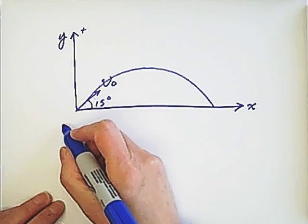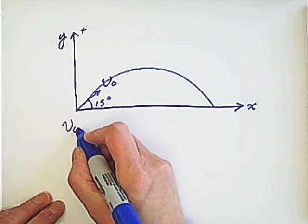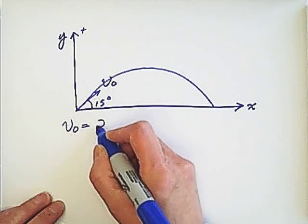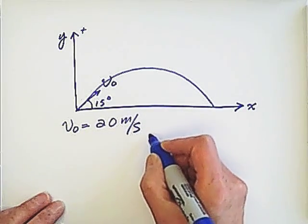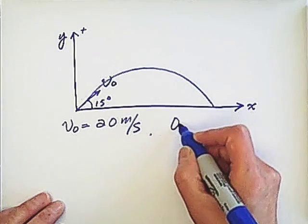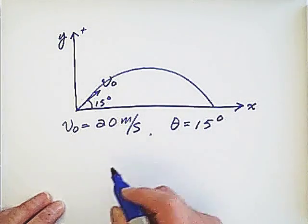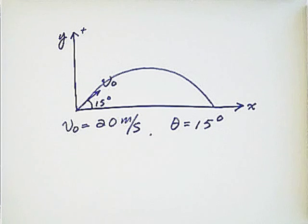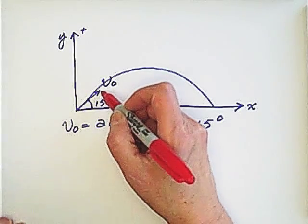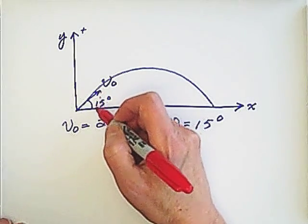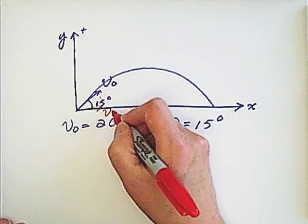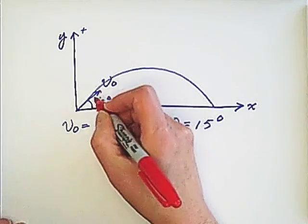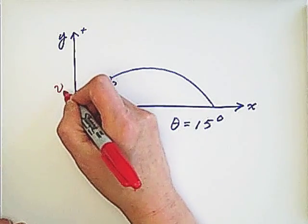We are given initial velocity v₀ equals 20 meters per second and the angle equals 15 degrees. When we do projectile motion at an angle, we need to find two components: one on the x direction, which is v₀ₓ, and the other on the y direction, which is v₀ᵧ.